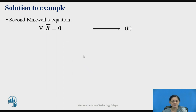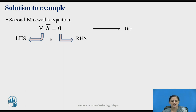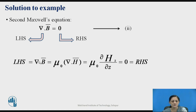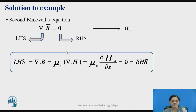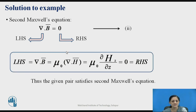Now consider the second Maxwell equation: ∇·B̄ = 0, where B̄ is the magnetic flux density. For the LHS, ∇·B̄ = μ₀(∂Hz/∂z) = 0, since the given H̄ is a function of x and t only, so differentiation with respect to z is zero. Therefore ∇·B̄ = 0, which matches the RHS, and the given pair satisfies the second Maxwell equation.